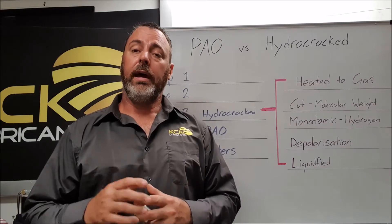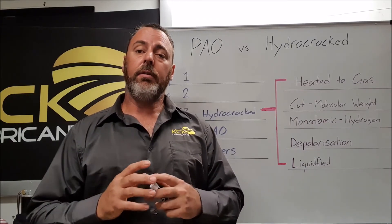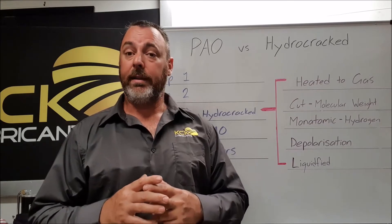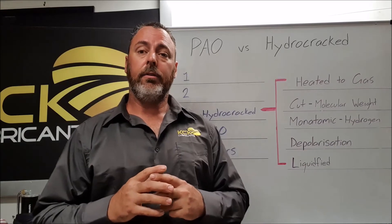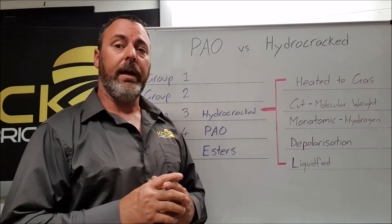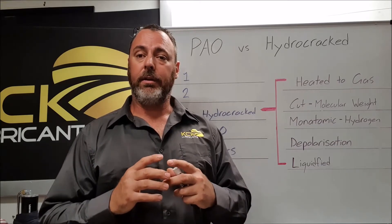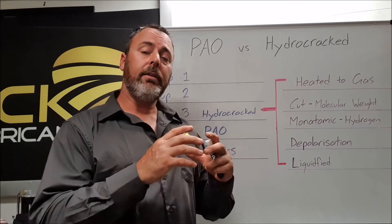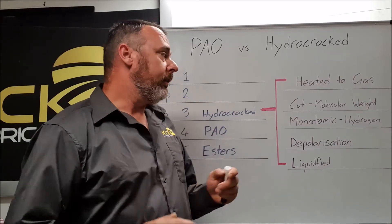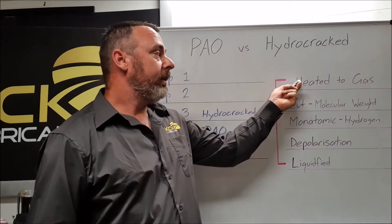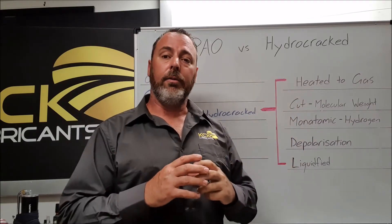Hydrocracking is a complex process and a lot more complicated than we're going to go into today, but generally speaking the oil is heated to about a thousand degrees under a pressure of about three thousand pounds. This turns the liquid into a gas. As a gas it's very easy to separate by molecular weight and take cuts, so we can collect the good hydrocarbons for lubrication and move away the impurities. We've cut the molecular weight so we've got the good lubricating hydrocarbons stored.